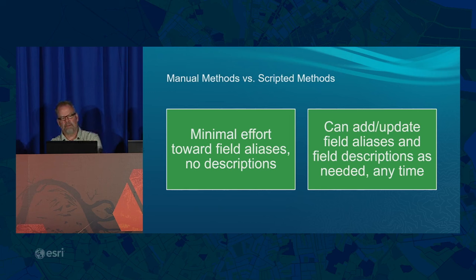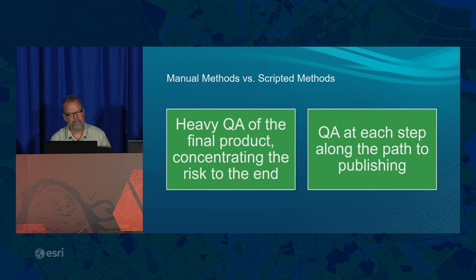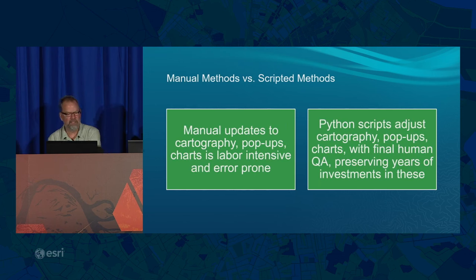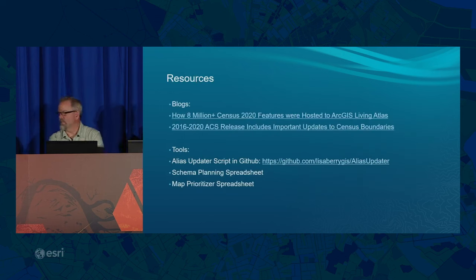As a cartographer, the biggest benefit is being able to script all updates into the cartography and pop-ups themselves. Instead of planning things out a year ahead, for some things we do same-day service; for significant changes, we take about two weeks. There are some resources available. And for the Living Atlas ACS layers, we treat field names and field aliases as sacred, copy descriptions directly from census documentation, and that trust-building tends to pay off.